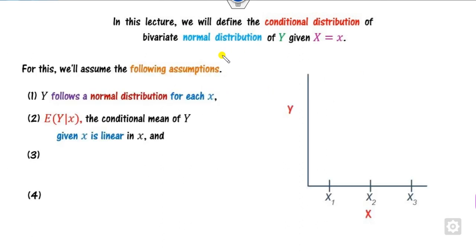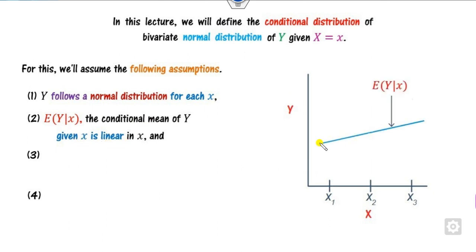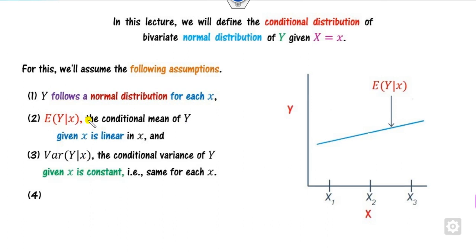Before starting the conditional distribution, let us recall some assumptions. If you have two random variables x and y such that y follows a normal distribution for each x, the conditional mean of y given x is linear — meaning if you draw the graph it will be a straight line. The variance of y given x is a constant value, meaning it is independent of x.